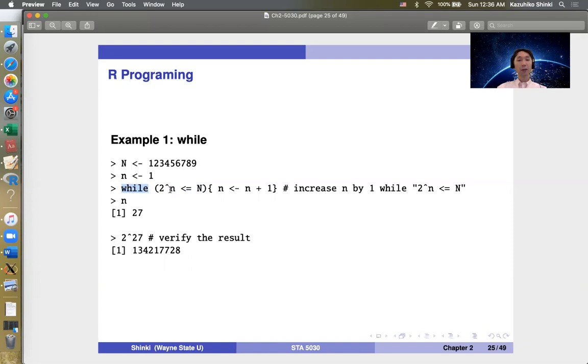In this case, n = 26 satisfies this condition, so n is increased by 1 and becomes 27. But for 27, it no longer satisfies this condition. So R stops there and returns n = 27. Actually, 2^27 is 134 million, which is just slightly larger than capital N. For 26 power, this is smaller than capital N. So this is how to code this question.